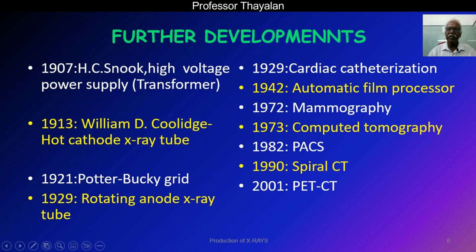Further developments followed: cardiac catheterization, automatic film processors, and mammography. The next important milestone is computed tomography in 1973, which gives cross-sectional images of anatomy, developed by Hounsfield in England. Hounsfield was awarded the Nobel Prize for this discovery. Then followed PACS — picture archiving and communication system — spiral CT, and PET-CT.